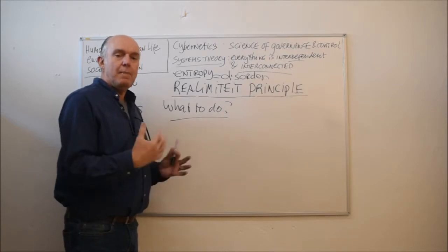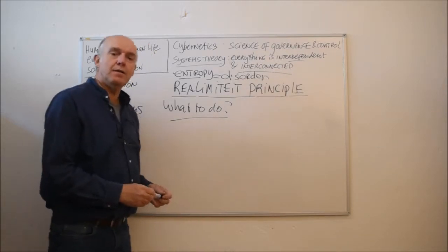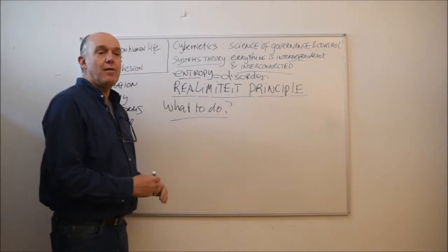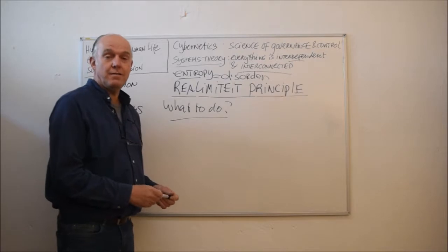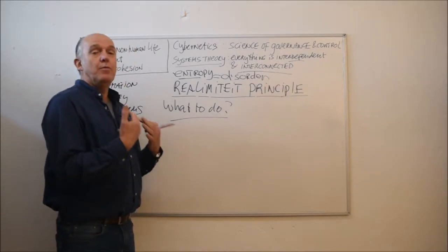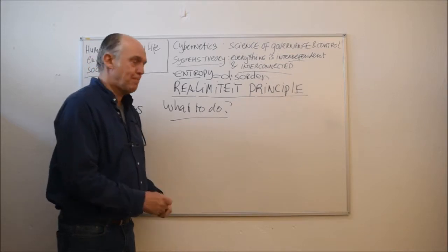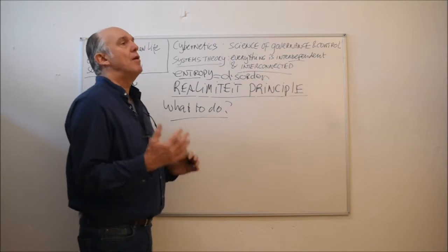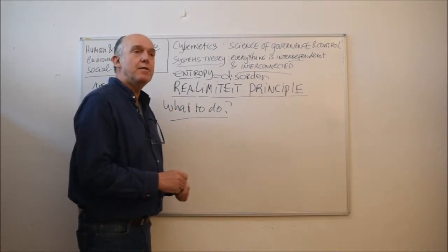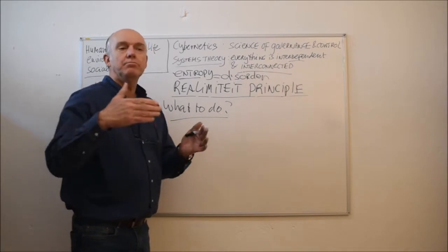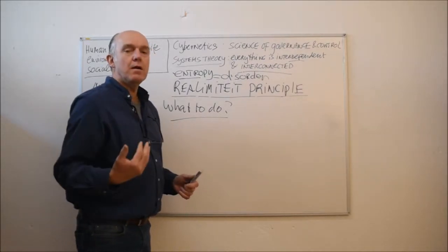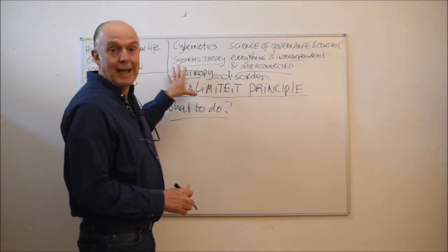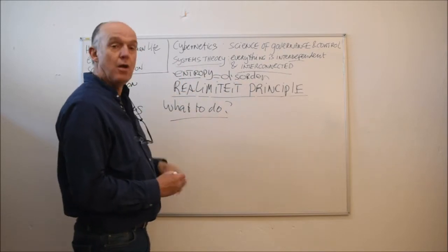If we now know that many systems we have created are negative interdependent systems leading to entropy, we therefore have the information how to change that. We have the information, we use it as energy to change the matter. So we all have to sit down, think of, is my system, my organization, my political idea sustainable or not sustainable? When we apply the real limitate principle, we can very easily learn it.